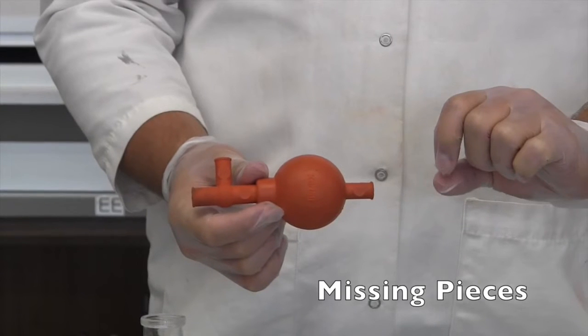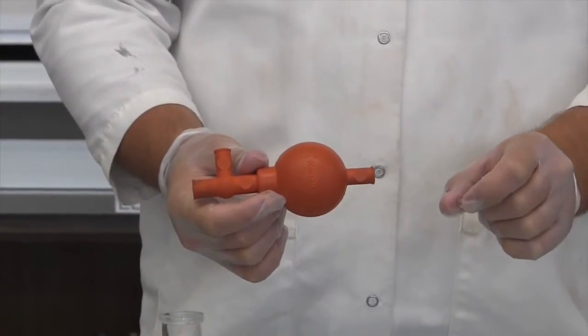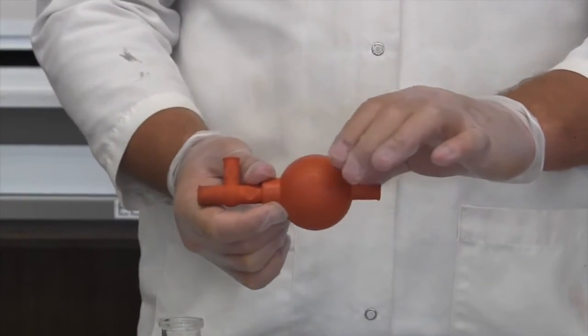Sometimes the small plastic balls that help seal each valve come out and get lost. If your bulb is missing one or more, tell your professor and get a new one. A bulb will not keep a vacuum if a plastic ball is missing.